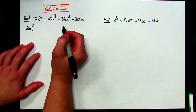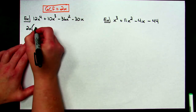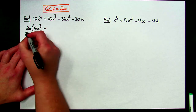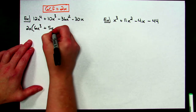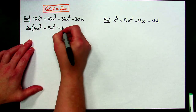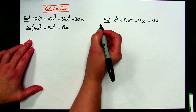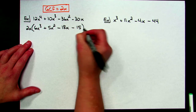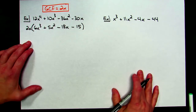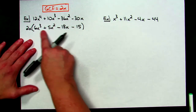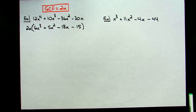If you can factor out a greatest common factor, you should always do that before you start working the problem with any other type of factoring. So I'm going to take out that 2x and factor it out of each one of those terms. 12x to the fourth factor out 2x gives me a 6x to the third; 10x to the third factor out that 2x gives me a 5x squared; minus 36x squared factor out a 2x gives me a minus 18x; and then minus 30x factor out the 2x gives me a minus 15.